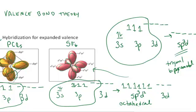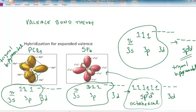which is what we always see when we have the sp³d² hybridization. So, for the expanded valence, we can have sp³d or sp³d².